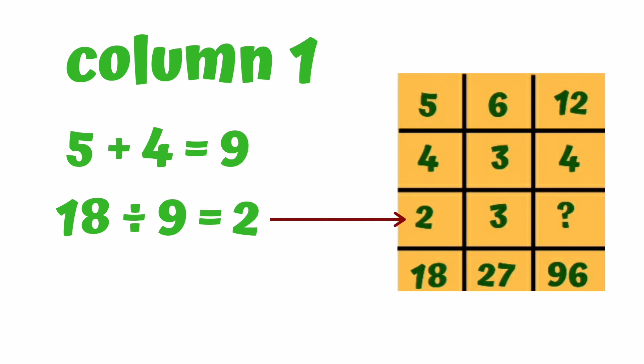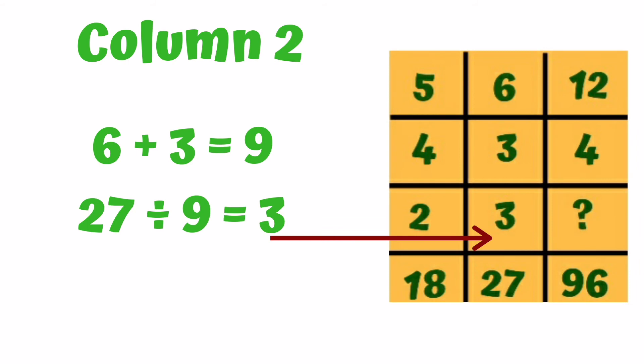The same process, we follow for column 2. Look, the same result. So, 6 plus 3 equals 9. Again, we divide 27 by 9. The answer is 3.